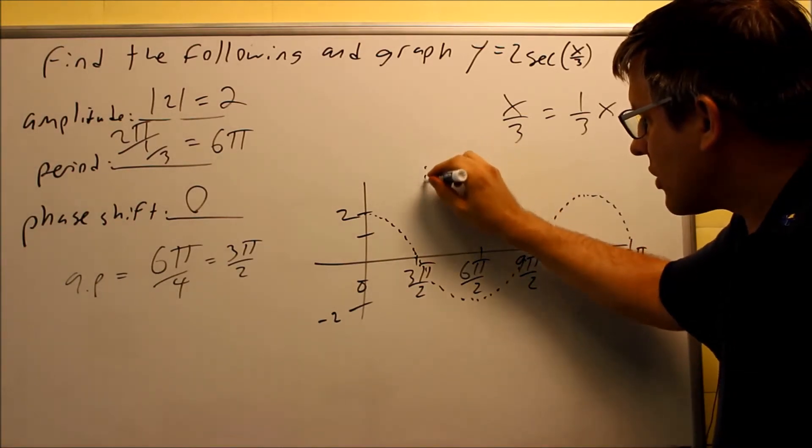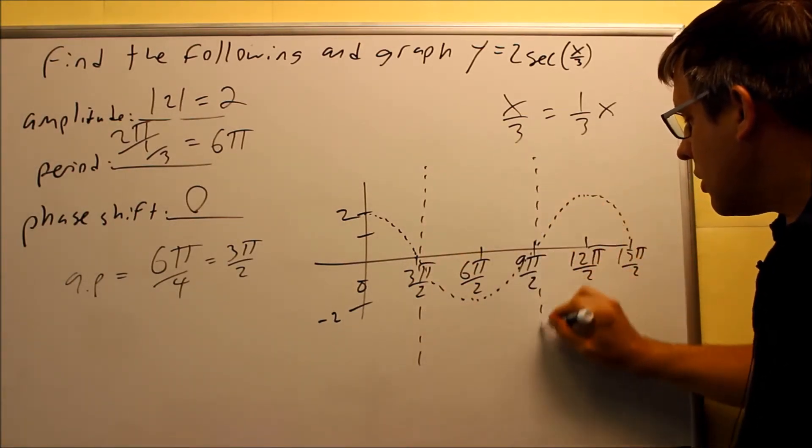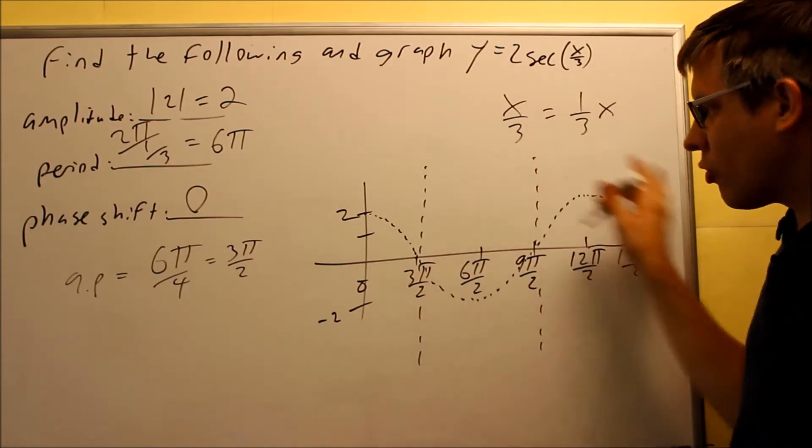Every place where it crosses the x-axis, we're going to draw in these dotted lines. So this whole graph is now set up.